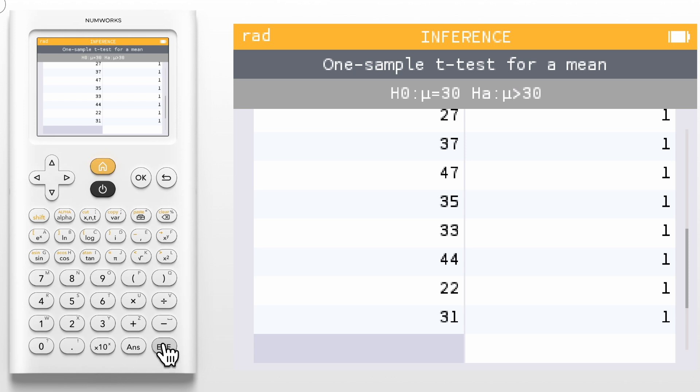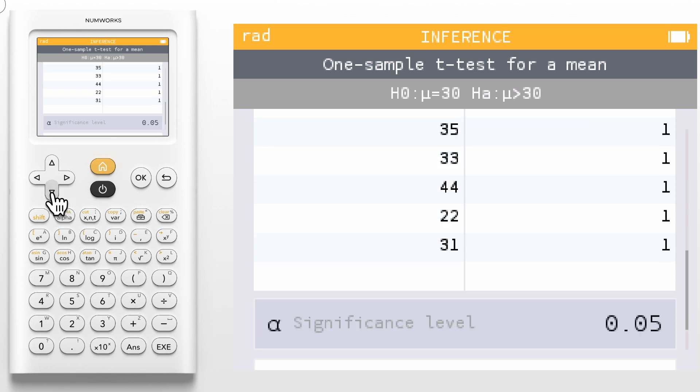Once the data has been entered, navigate to the bottom where you can change your significance level. I will leave mine at 0.05. Press OK on Next.